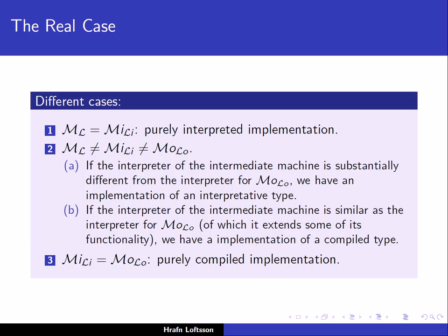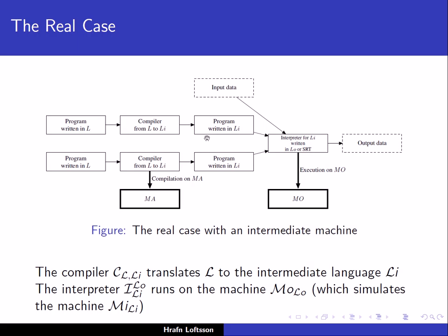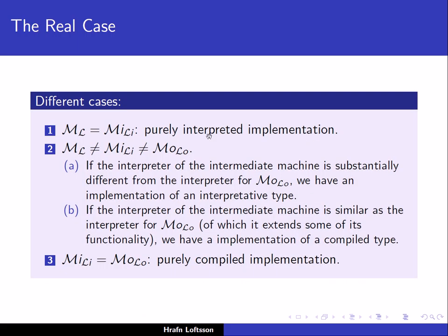Earlier we talked about purely interpreted and purely compiled implementations. In the case where ML equals MI_LI, we basically do not have an intermediate language. In that case we are interpreting the original language: we have a program written in L, we skip the compilation step, and directly interpret the original source language L. That is the purely interpreted implementation.